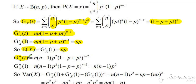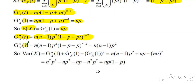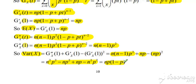For the variance, we differentiate again. Multiplying by the power and by the p in front of t, we obtain the second derivative expression. Substituting t=1, the p's cancel leaving n(n−1)p². Putting it all together, the variance equals n(n−1)p² plus E(X) minus E(X)², which simplifies to np(1−p). That's our proof of the formula for the variance of the binomial.